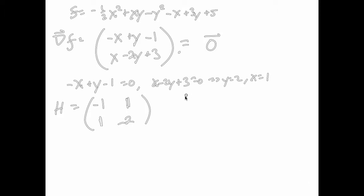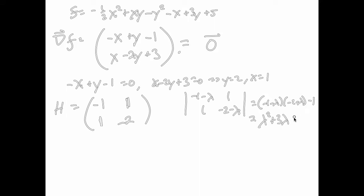I'm going to check the eigenvalues of the Hessian by taking the determinant of H minus lambda I. That gives negative 1 minus lambda times negative 2 minus lambda minus 1, which equals lambda squared plus 3 lambda plus 1. This doesn't factor nicely, so we use the quadratic formula. That gives lambda equals one half times negative 3 plus or minus the square root of 9 minus 4, which is the square root of 5.